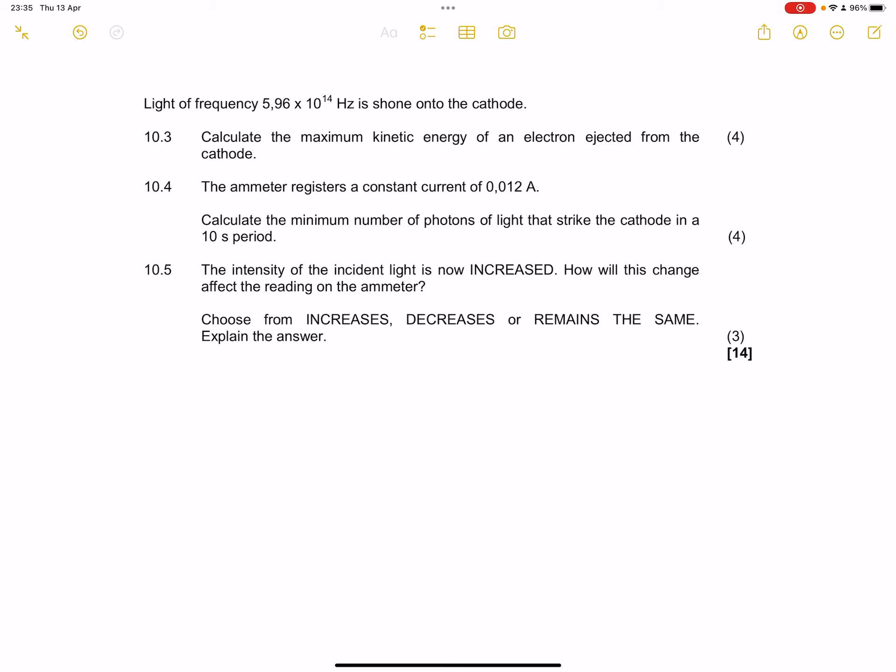They say we've got light of frequency 5.96 times 10 power 14 hertz is shown onto the cathode. They want us to calculate the maximum kinetic energy of the electron ejected from the cathode. Now we know in this case we're going to use E is equal to omega 0 plus E k max. So we're looking for the kinetic energy. So that means we need to calculate the energy there as well as the work function.